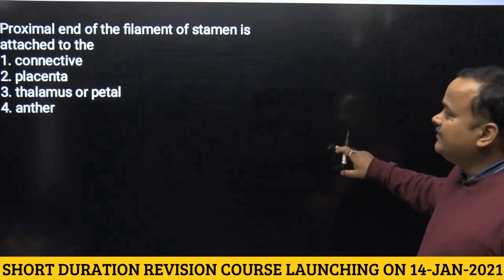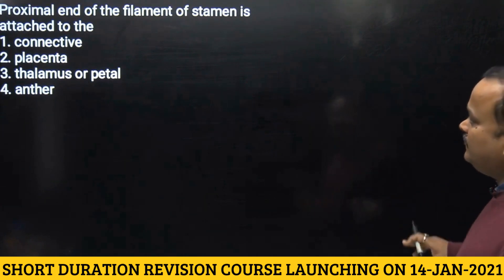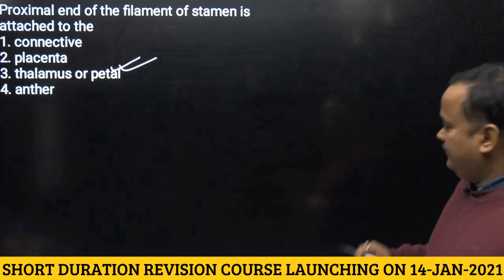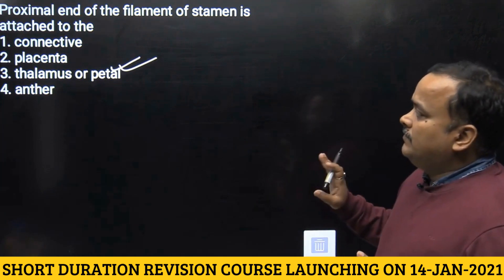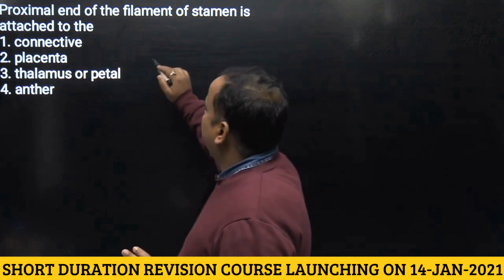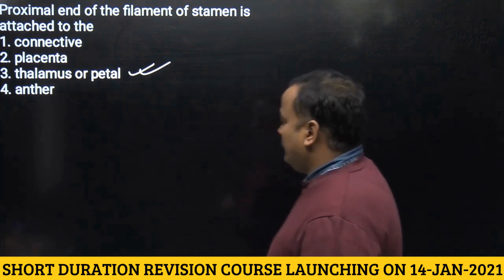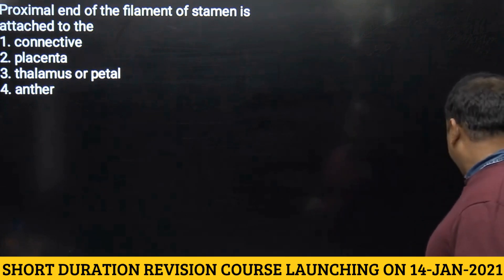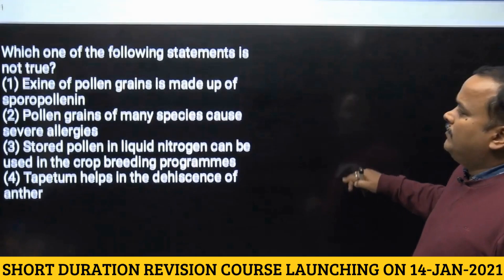The next question, which was discussed while going through the text, states that the proximal end of the filament of a stamen is attached to the connective. The correct answer is that it is attached to the thalamus or petals, so the answer will be the third option.